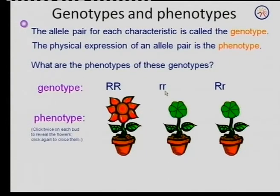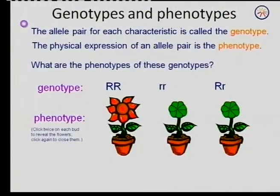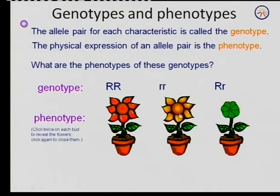Here we have two recessive alleles. The small r stands for what color? The small r stands for yellow. So the flower is yellow because the small r is the recessive allele for yellow. Because it is homozygous yellow, that is the phenotype.